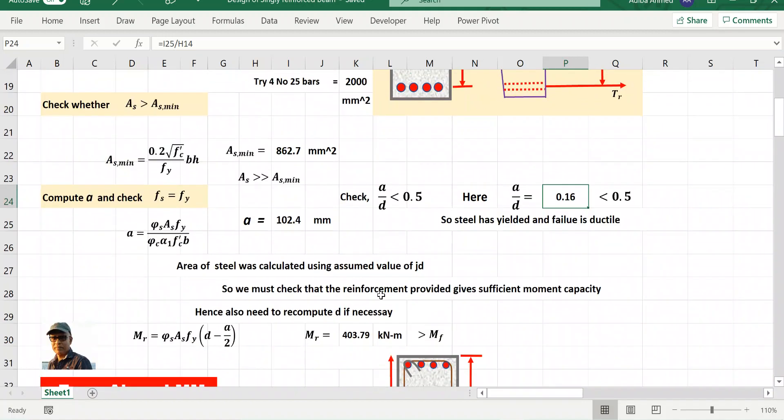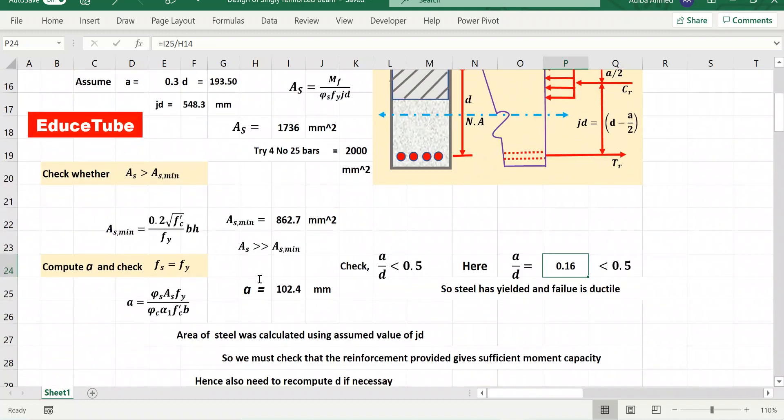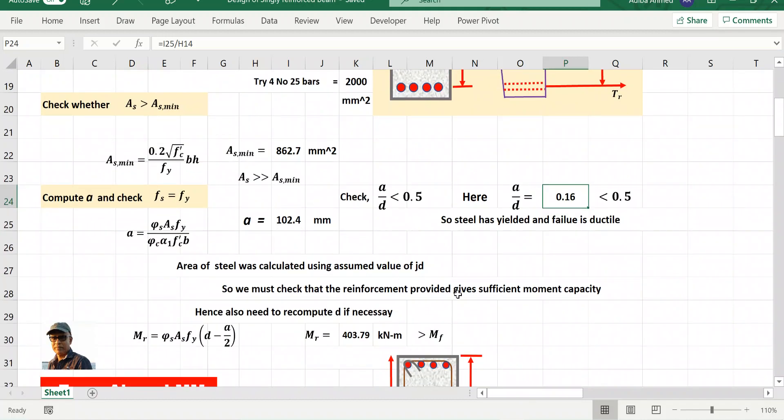Now our next task is to check the moment resistance. That is very important because if this moment resistance greater or less than MF. MF means what we got from the factored bending moments. Because beam has to carry this moment, but if it has capacity more than that, so we are perfect. That is why we need to check the moment resistance of the section.